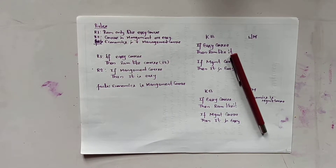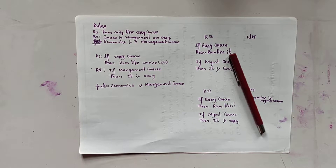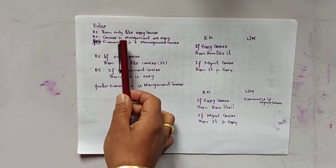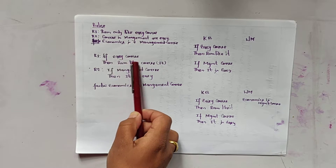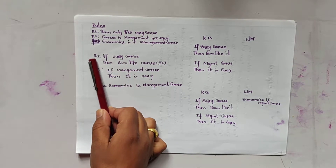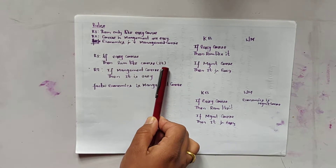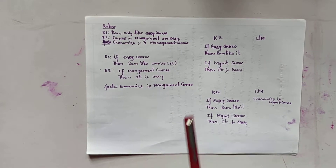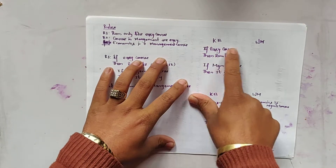Let us consider an example with rules: Rule one - Ram only likes easy courses. Rule two - courses in management are easy. The given fact is: economics is a management course. We can convert these into rule form: Rule one - if easy course then Ram likes it. Rule two - if management course then it is easy. In an expert system there is a knowledge base and working memory.